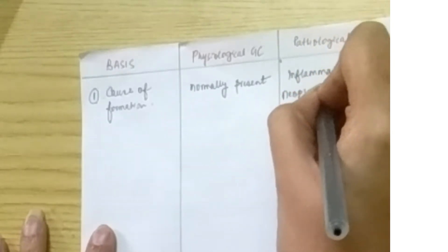whereas pathological giant cells will have some underlying cause of formation. Normally they're not present in the body. So what is the cause of formation? That can be some neoplastic cause or some inflammatory cause in the body due to which pathological giant cells are formed.